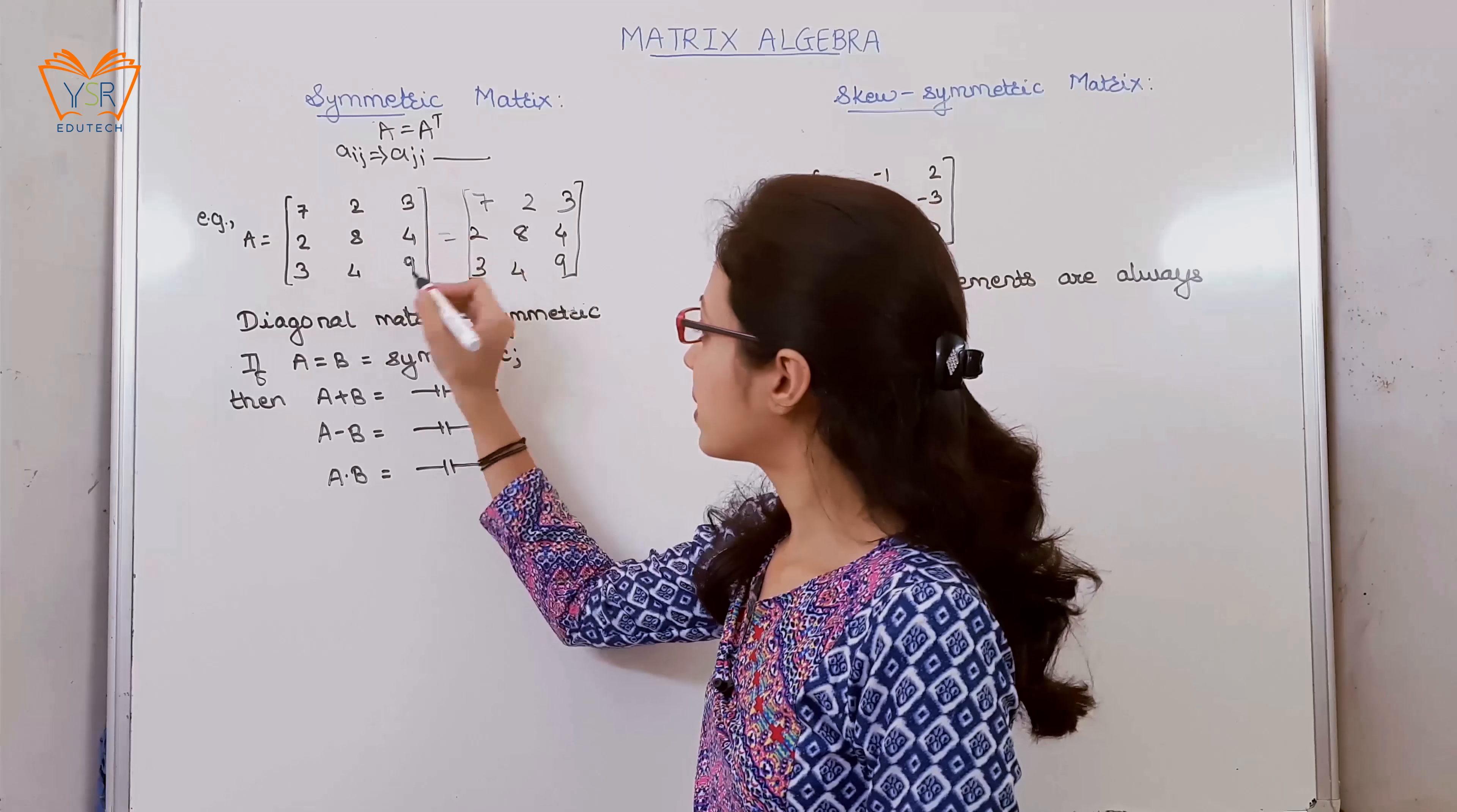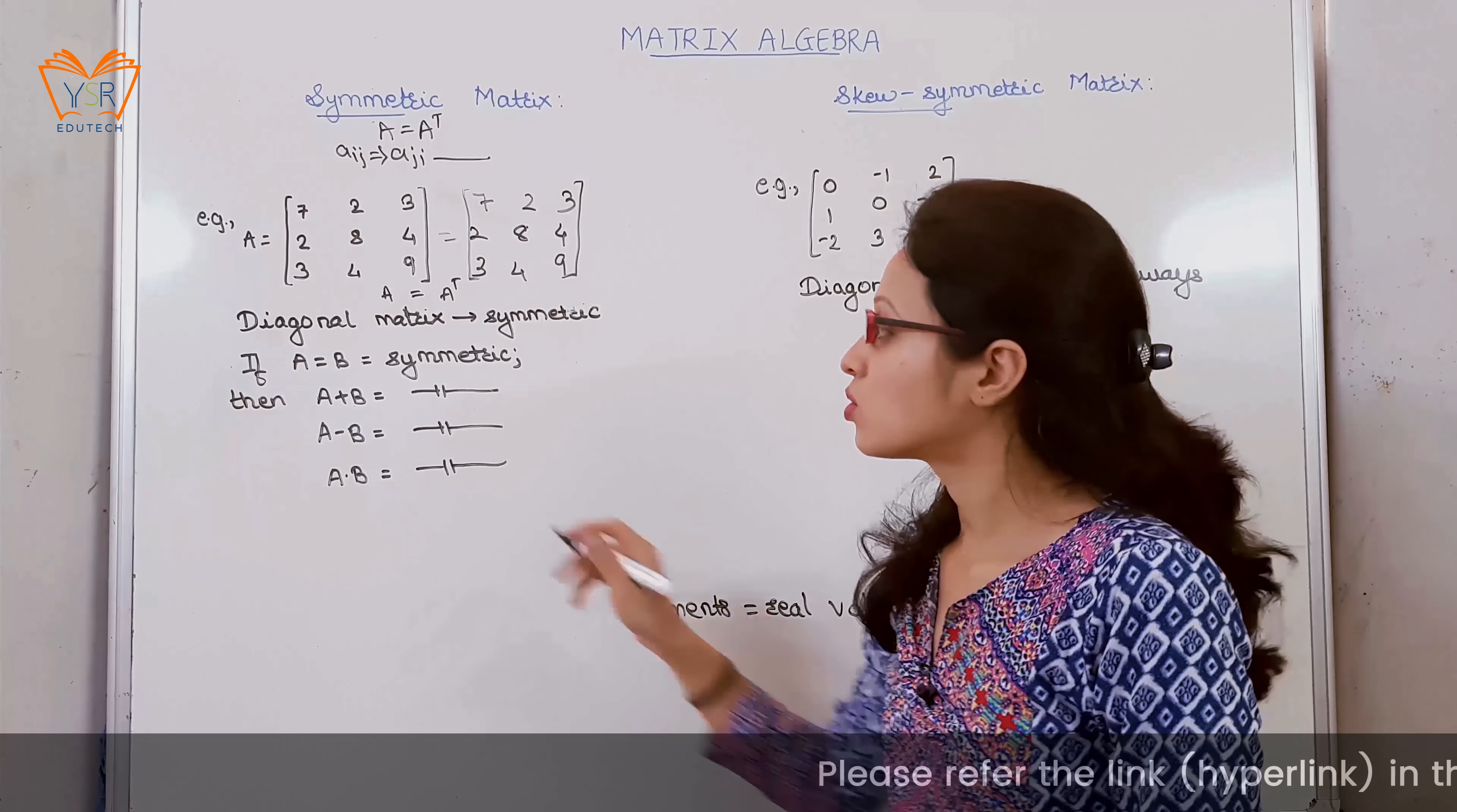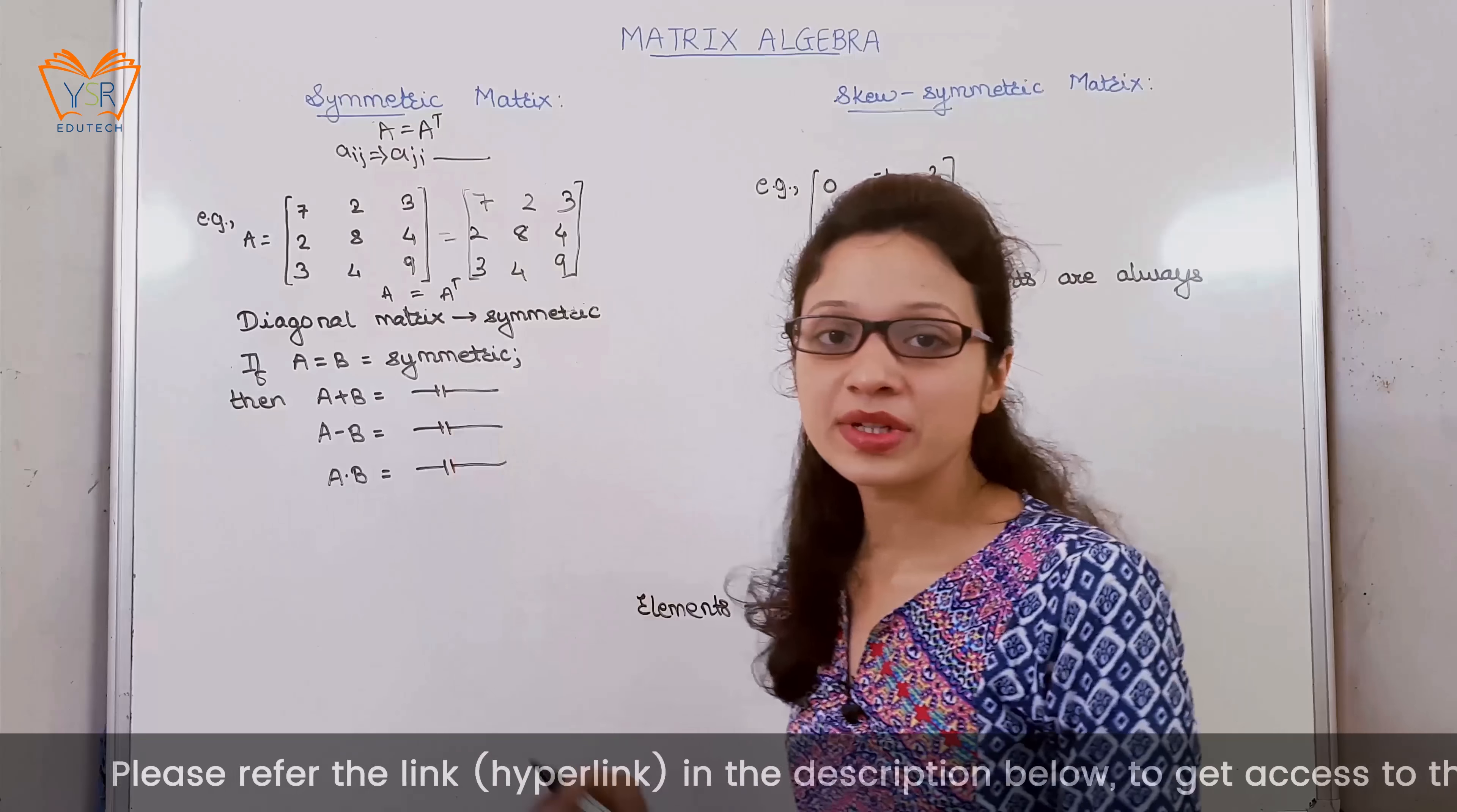So if we compare each element, we can say that A is equal to A^T. So A is called a symmetric matrix.